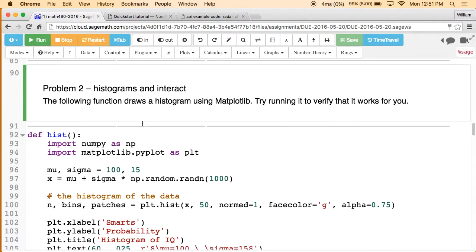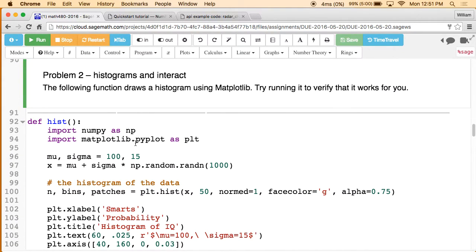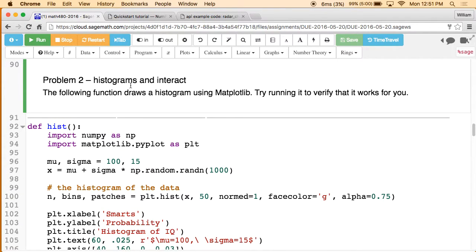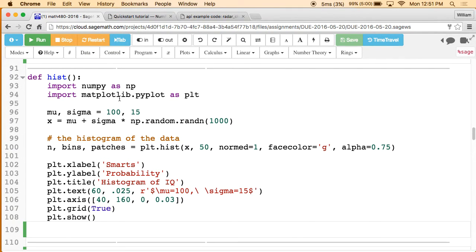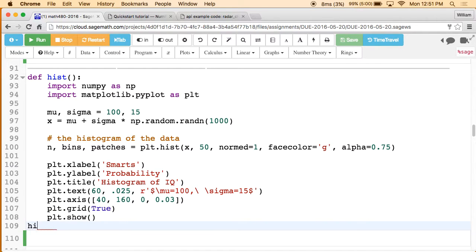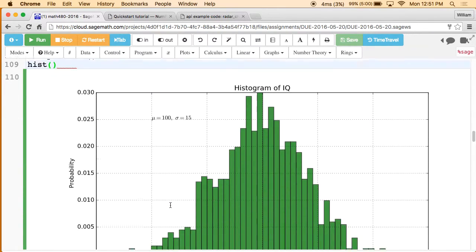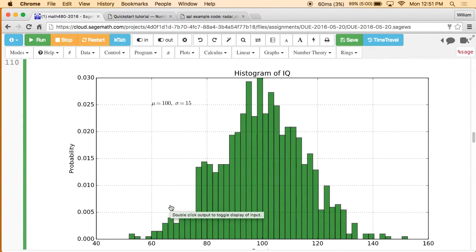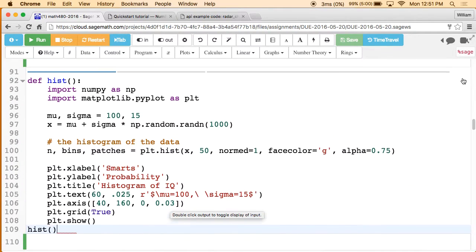That's the first problem. Problem two is about histograms and also Sage's interact functionality, which gives you interactive controls like sliders and drop down buttons and color selectors and so on. What you'll do here is this is a little function that if you evaluate it and run it, then it draws a histogram using Matplotlib. So that is a very nice clean histogram. It's easy to create. And this is the Matplotlib code that you use to draw that histogram.